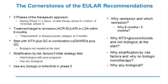The cornerstone of the EULAR guidelines are the three phases of therapeutic approach, revised after our first attempt. We aim at a target of remission or low disease activity by six months. We start with methotrexate plus glucocorticoid, or a combination of conventional synthetic DMARDs plus glucocorticoid. The feeling was that biologics were not needed as first line. Then treatment is stratified by risk factors if the initial strategy fails.